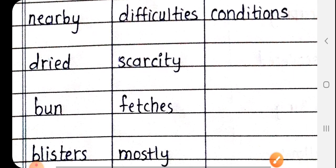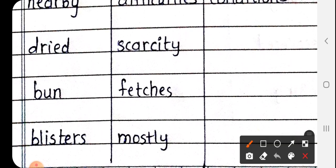Next, dried. D-R-I-E-D, dried matlab sukha. Jo cheese sukha jati hai usay kya kehte hai, dried. Next is burn. So student, here you have burn spelling correct. B-U-R-N. Burn means jalen.